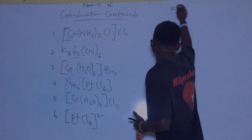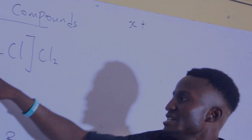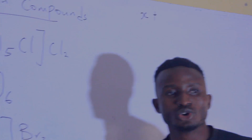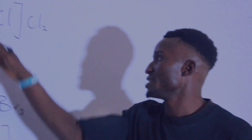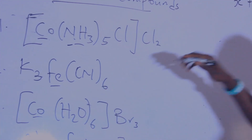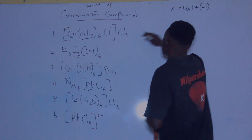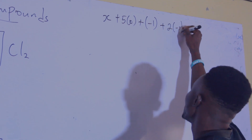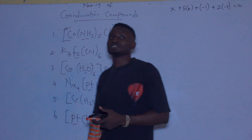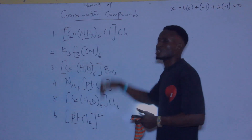We represent the oxidation number of cobalt as X. Ammonia is neutral, so its oxidation state is zero — that gives us five times zero. Halogens have an oxidation state of minus one, so for chlorine we have minus one. There is also chlorine outside the bracket, giving two times (minus one). Everything equals zero, because the algebraic sum of oxidation numbers of an uncharged compound is zero.